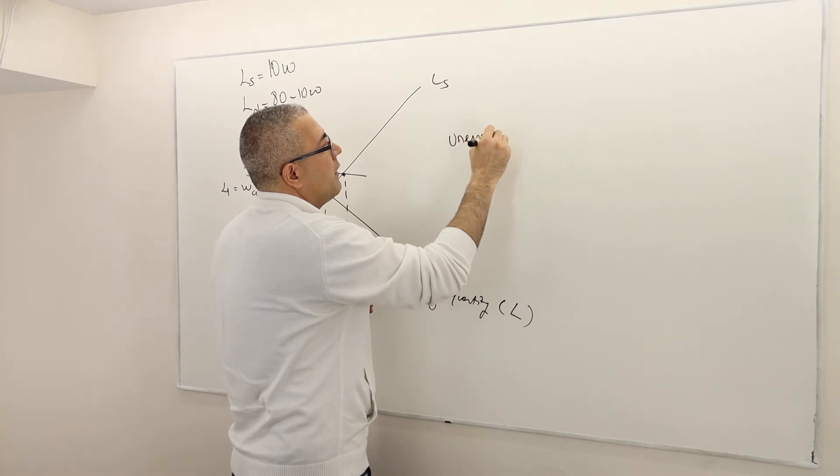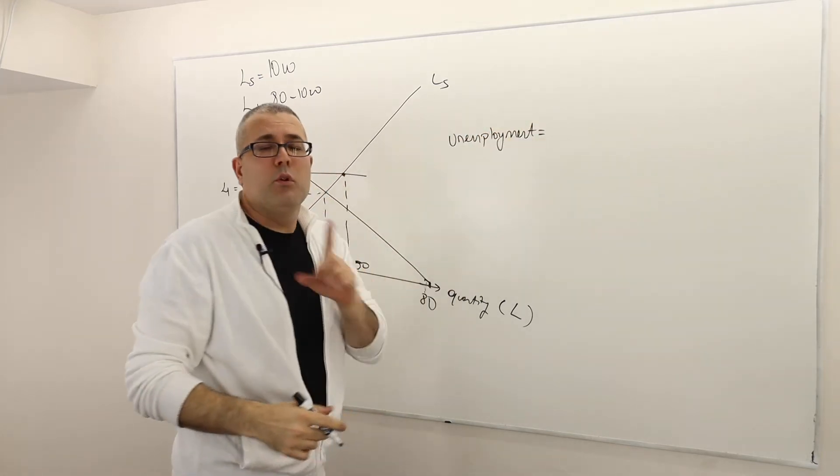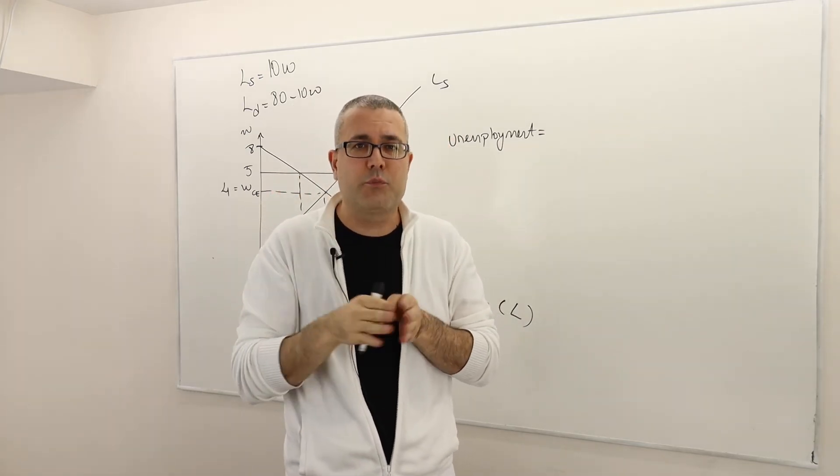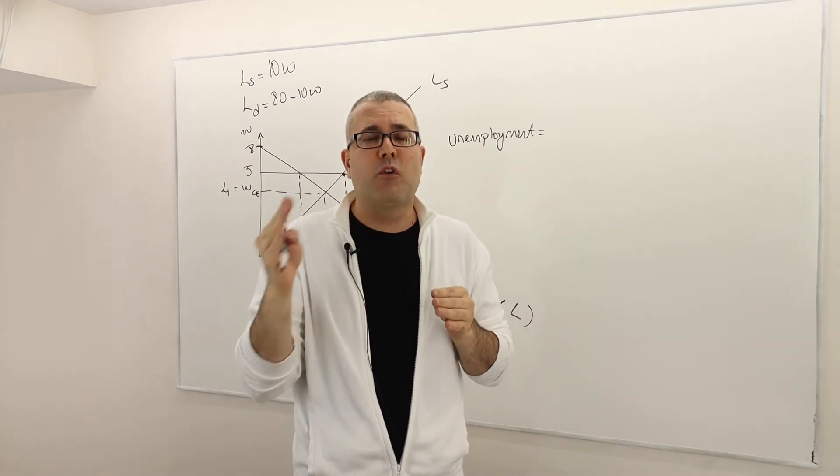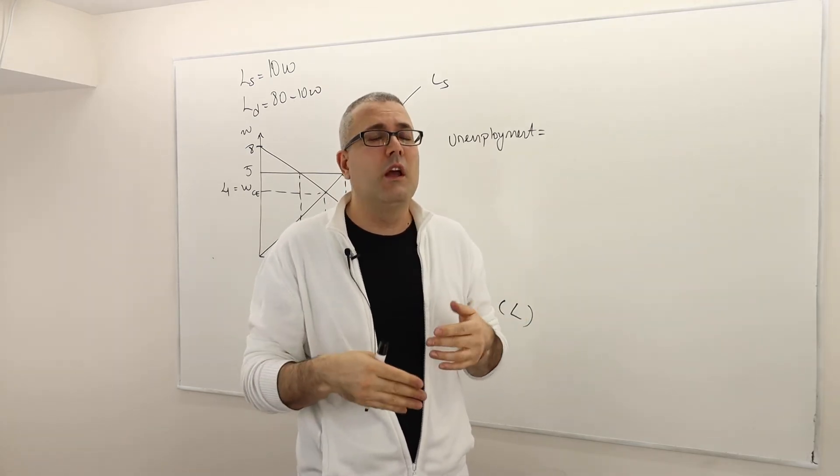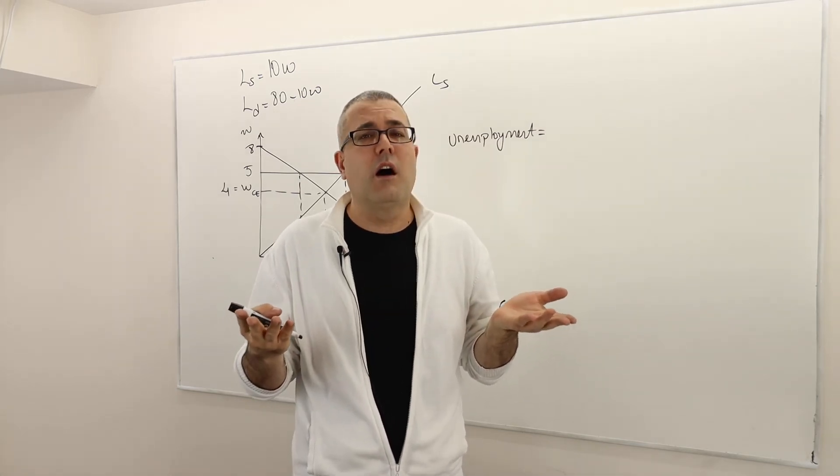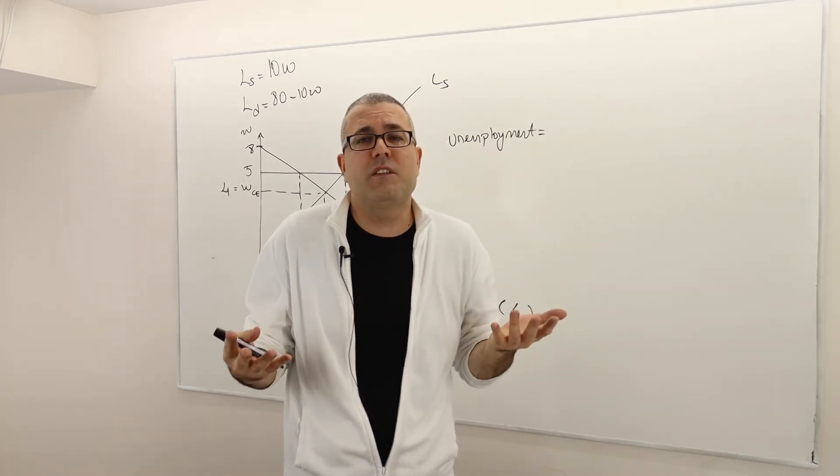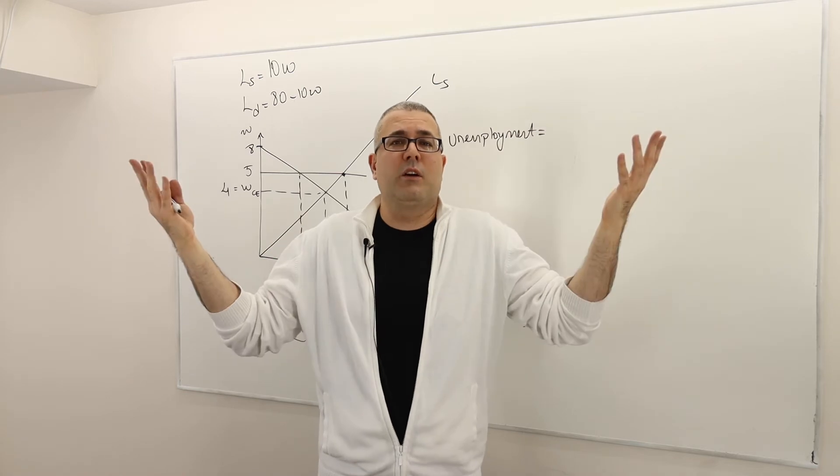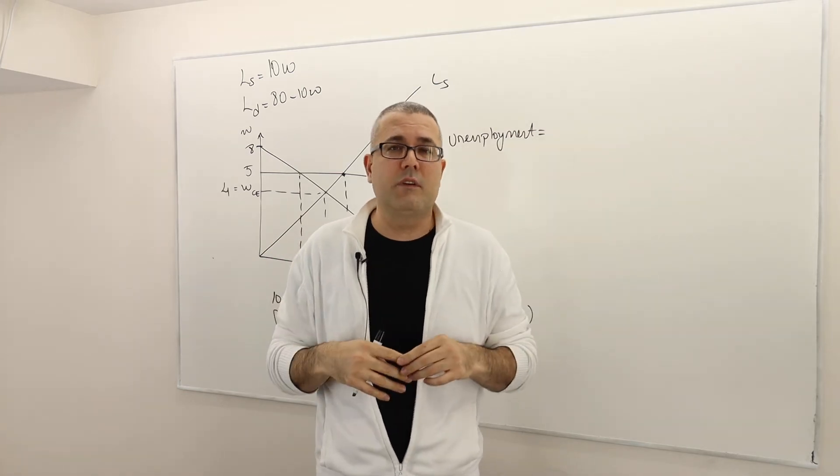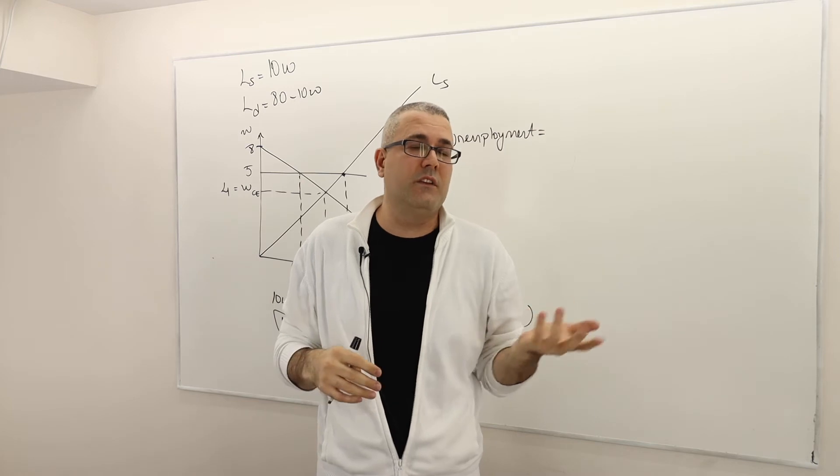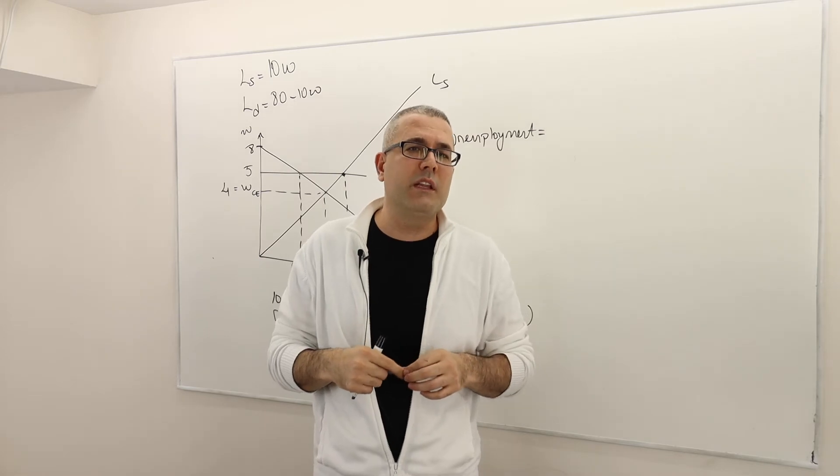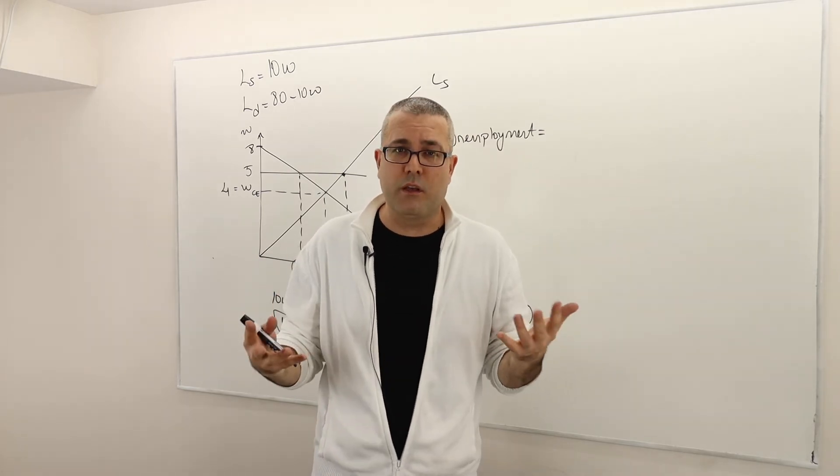So what does that mean? That means this is basically what we call unemployment. Unemployment is the difference between the number of people who want to work at a certain price minus the number of people who do actually work. People who are not interested in working are not, for example, counted in part of unemployment. So let's say I say I don't want to work because I have enough money. So I basically just chill.